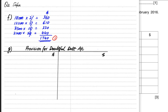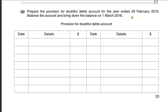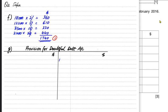It reduces our asset, that is the customer. The provision is always credit in nature, so the balance brought down always comes on the credit side. The year ends on 29th February 2016, and after February would come 1st March, so 1st March 2015 would be the start of the year.